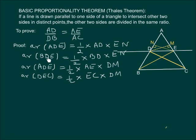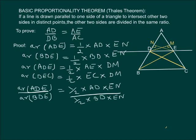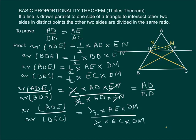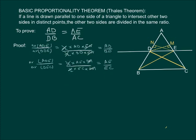Similarly we can take the ratio of ADE by DEC which comes out to be AE by EC. Let us mark these two equations as one and two.